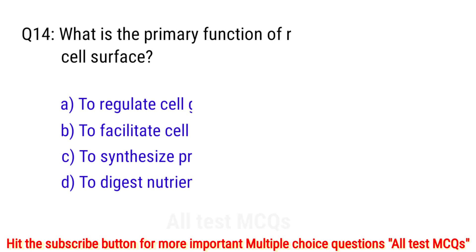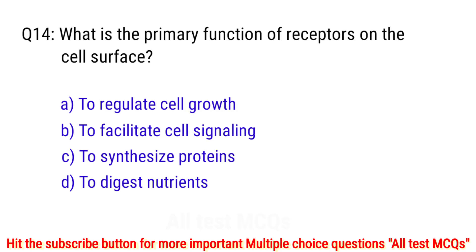Question number 14. What is the primary function of receptors on the cell surface? The right answer is option B: to facilitate cell signaling.